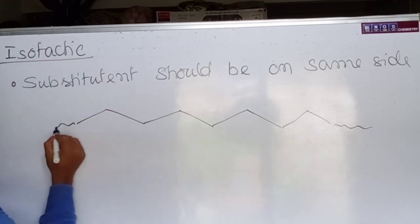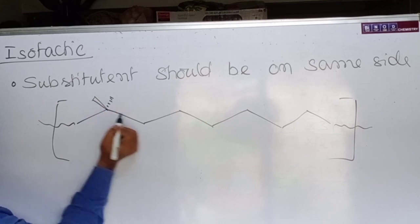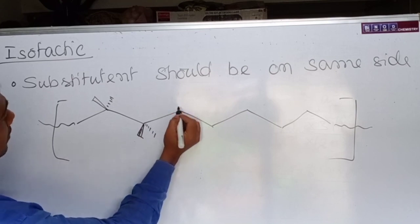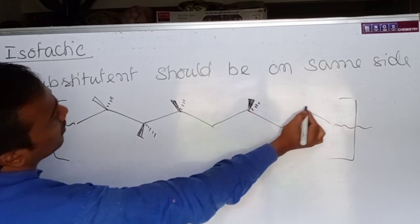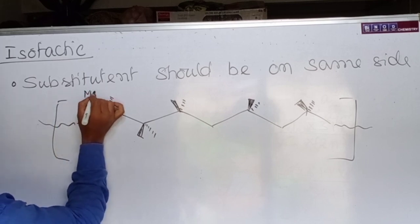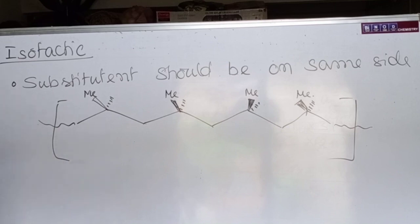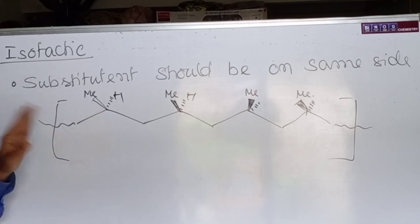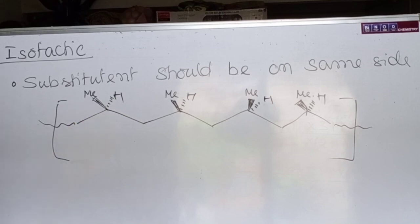Looking at the extended chain model, if you observe the methyl groups, they are all on the same side — all pointing towards your eyes. If all the substituents are on the same side, either towards your eye or towards the back of the plane, then it is called isotactic.